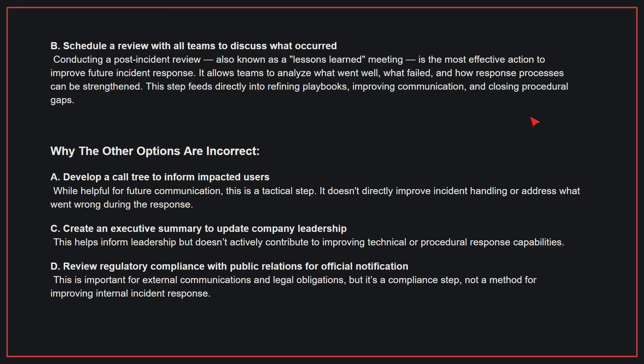Why the other options are incorrect? A: Develop a call tree to inform impacted users. While helpful for future communication, this is a tactical step and doesn't directly improve incident handling or address what went wrong during the response. C: Create an executive summary to update company leadership. This helps inform leadership but doesn't actively contribute to improving technical or procedural response capabilities. D: Review regulatory compliance with public relations for official notification. This is important for external communications and legal obligations, but it's a compliance step, not a method for improving internal incident response. Therefore, the correct answer is B.